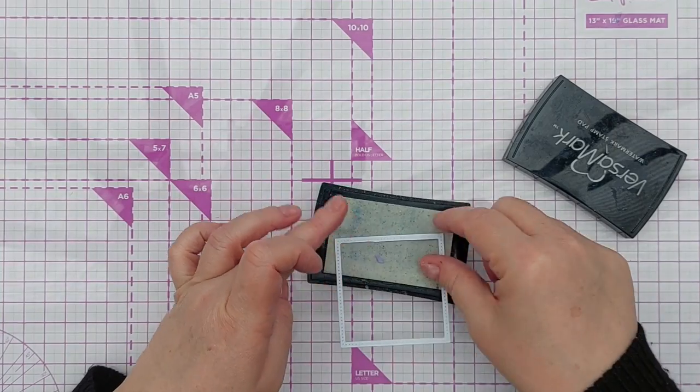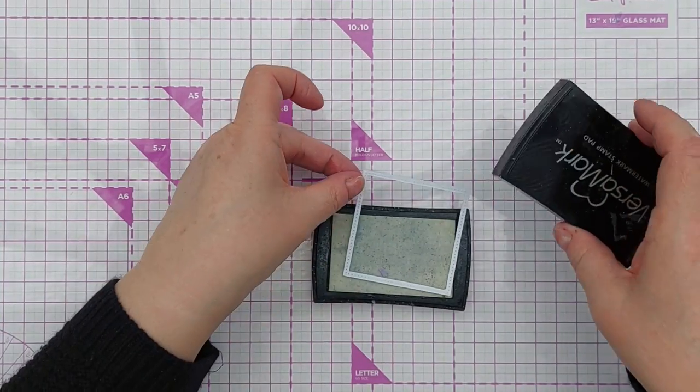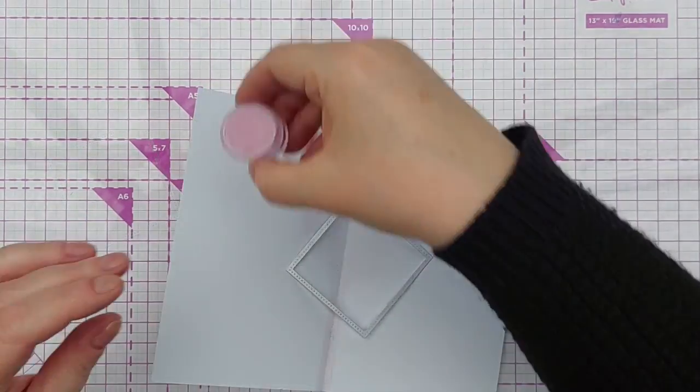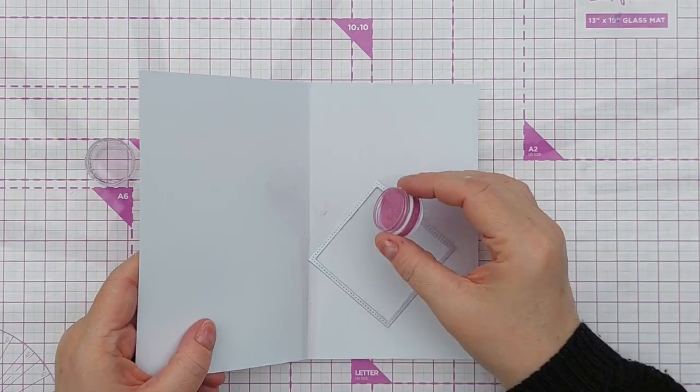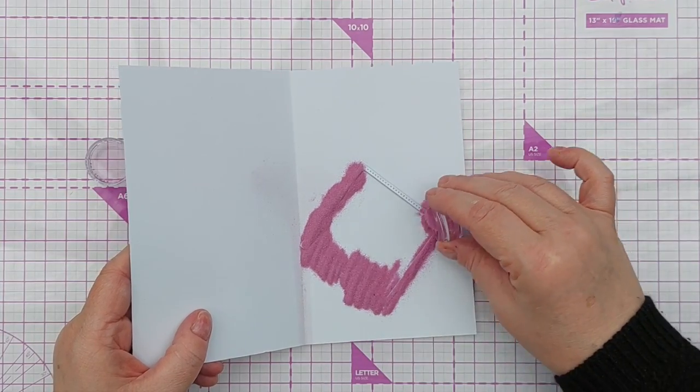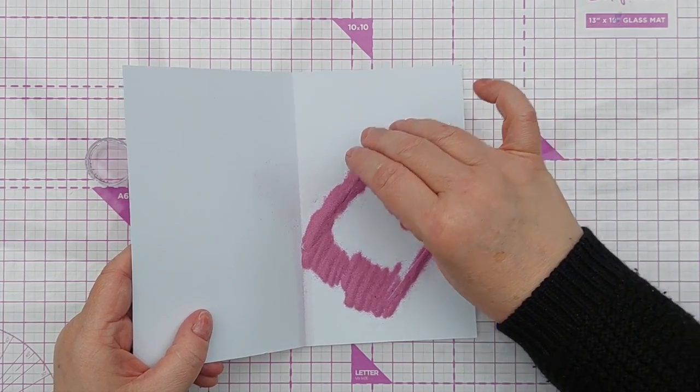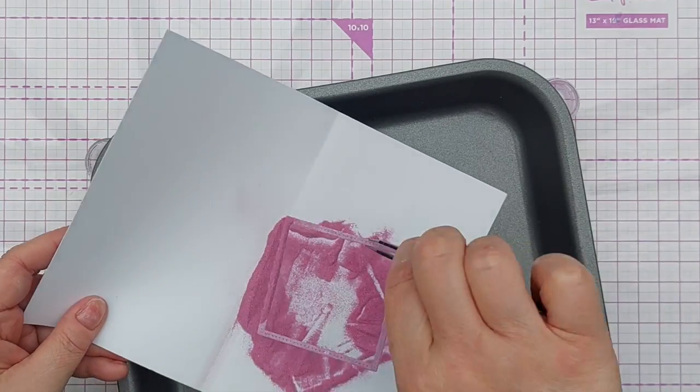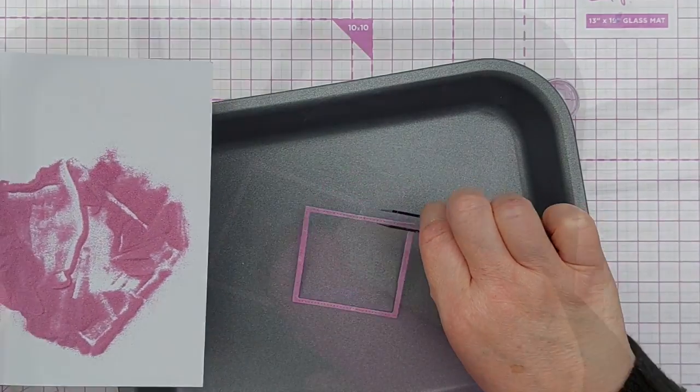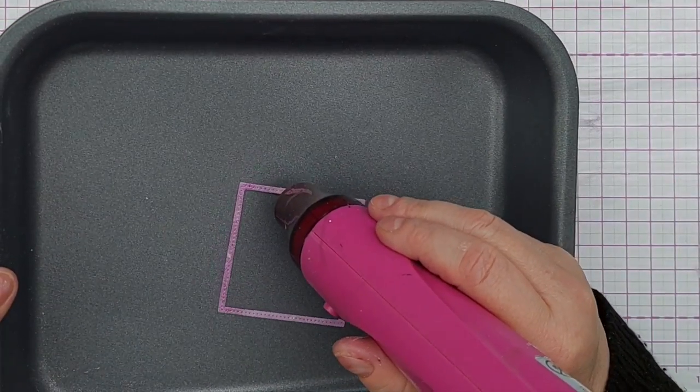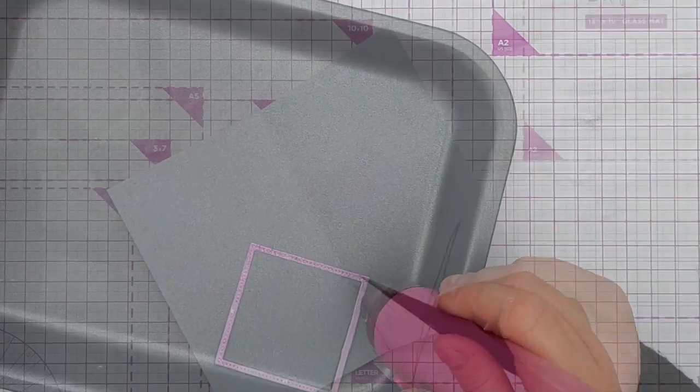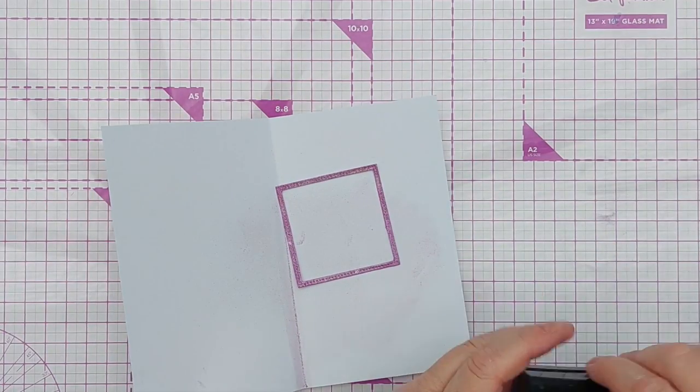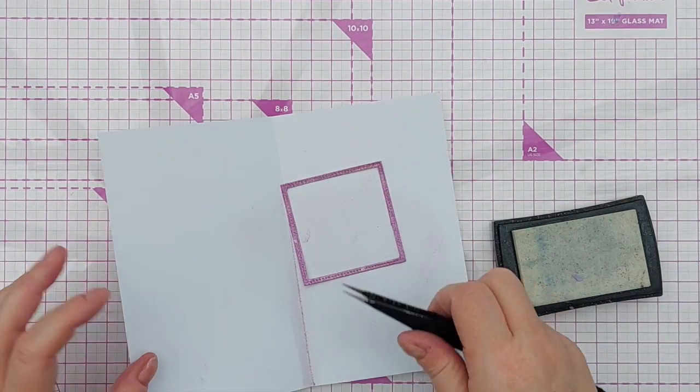I'll just ink up the frame using the embossing ink and pour over my powder. That is a little bit patchy so I'm just going to do that whole thing again.